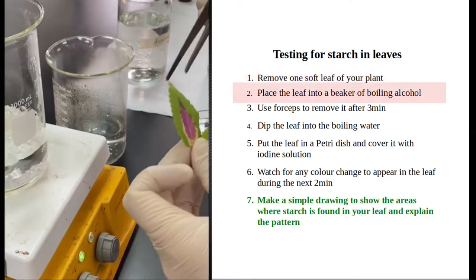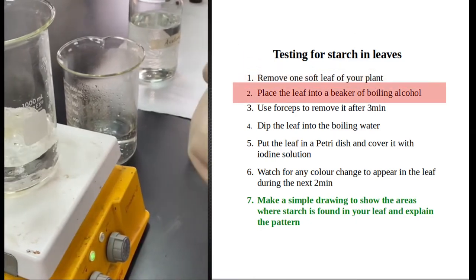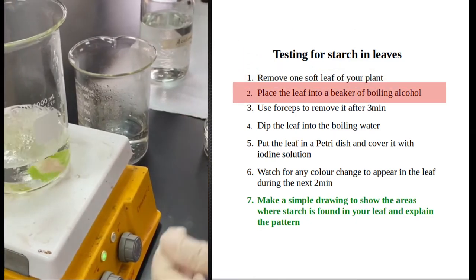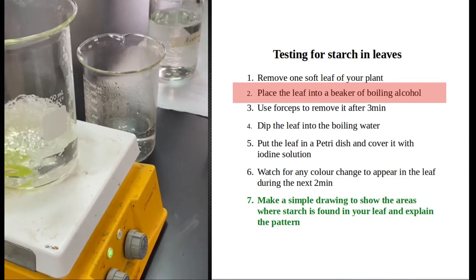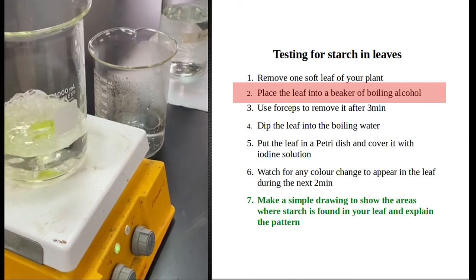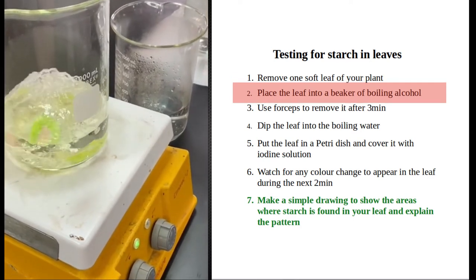I will dip those leaves in boiling ethanol to remove their pigments - their chlorophyll and the purple pigment as well. When this happens, I will remove the two leaves and dip them in hot water.